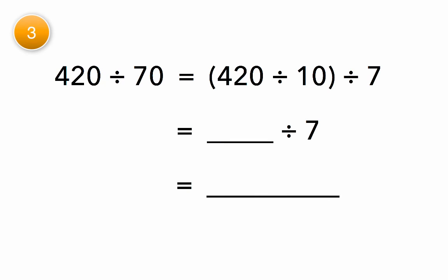Let's try another division problem using the break apart method. 420 divided by 70. We are going to break apart 70 since it is the two-digit divisor. 70 breaks into 10 and 7 because 7 times 10 equals 70.